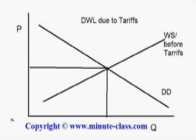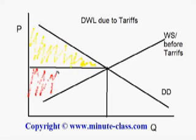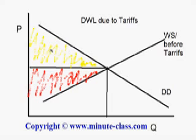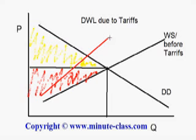The yellow area will be the domestic consumer surplus — again, it is only for domestic consumers. The red area will be the world producer surplus due to the transaction between the domestic consumer and the supplier, and this is the total surplus. We also have to draw the supply curve of the domestic producer. Since the domestic producer is just a subset of the world producer, their marginal cost is going to be either equal to or higher than that of the world producer.